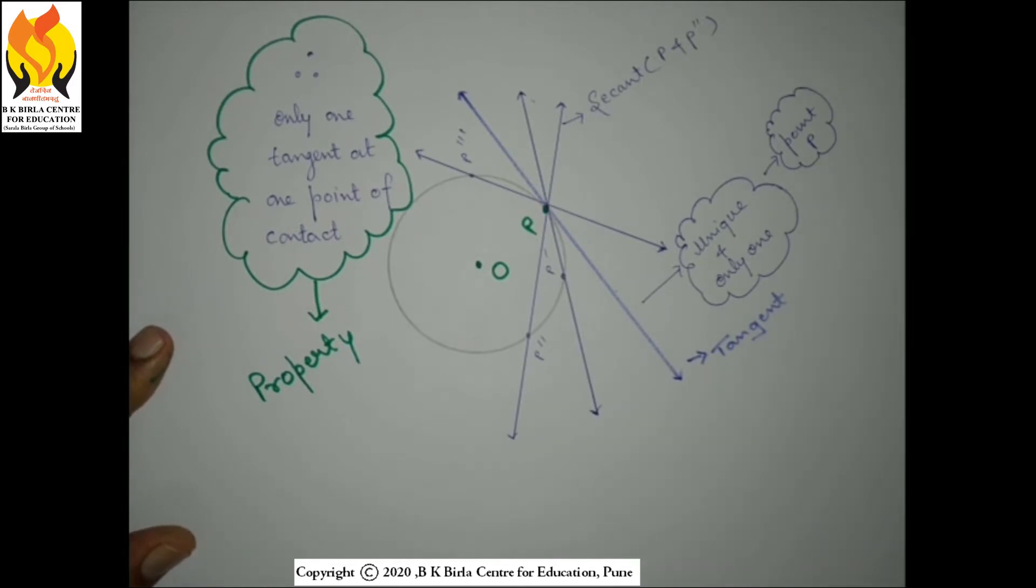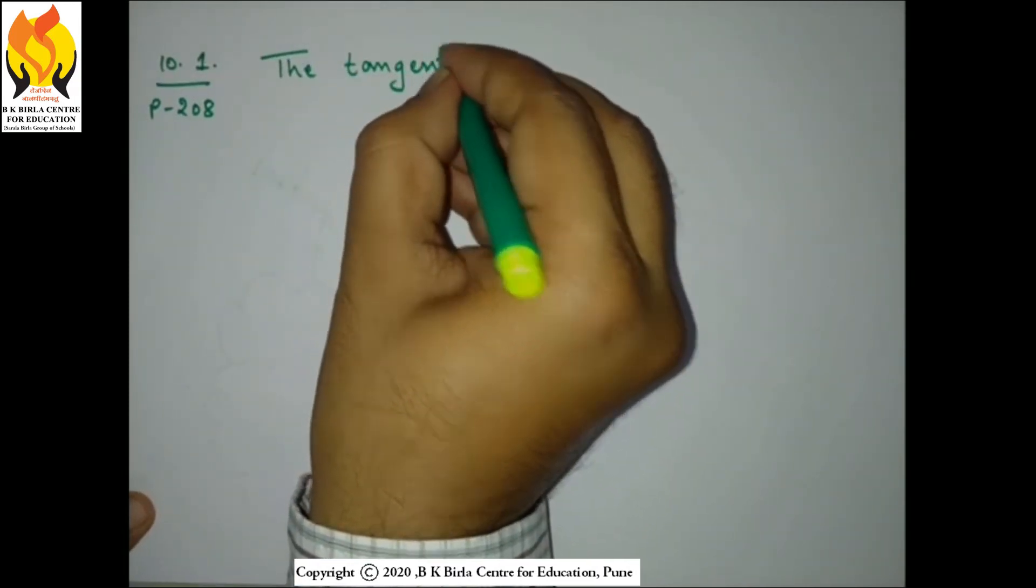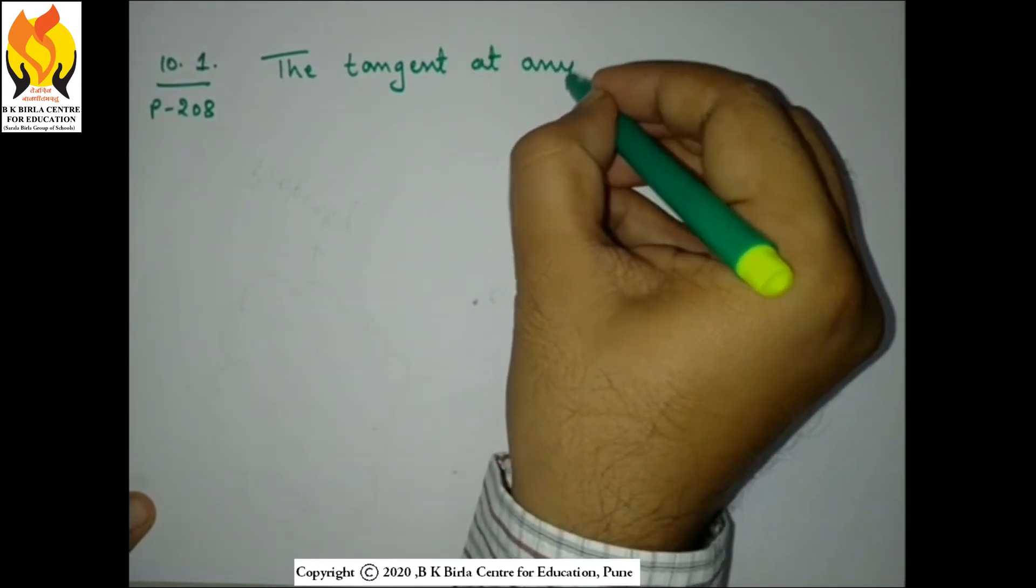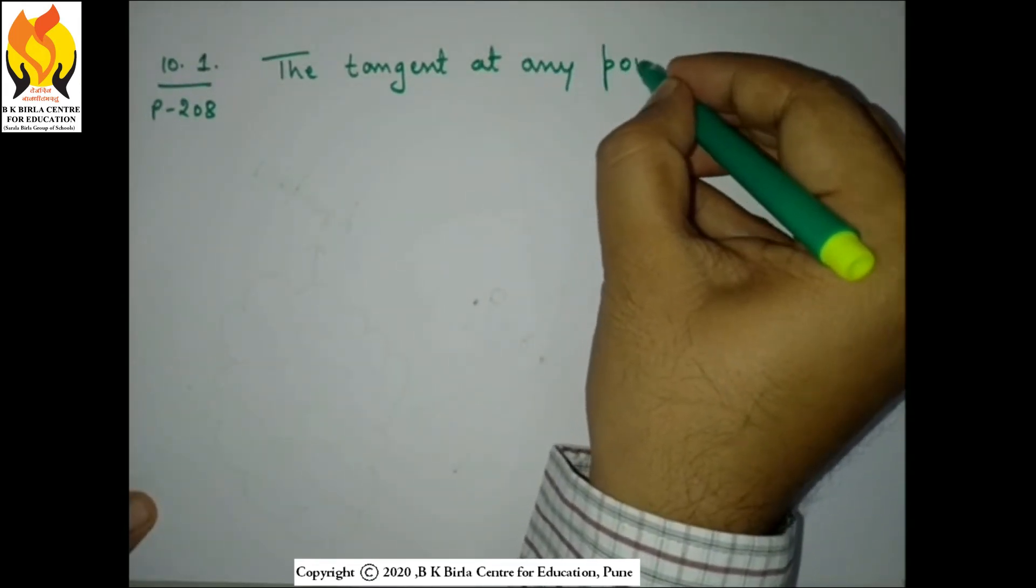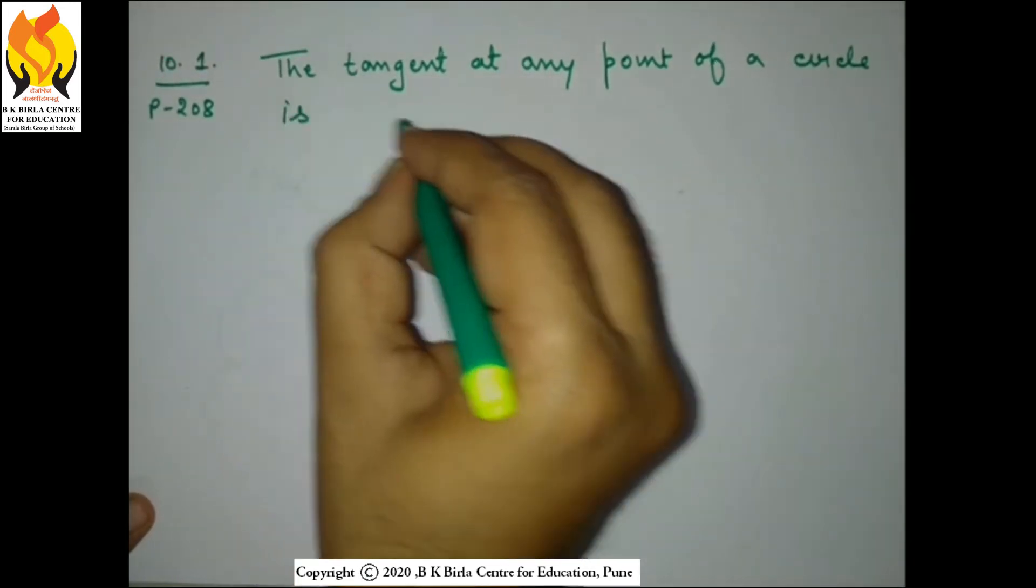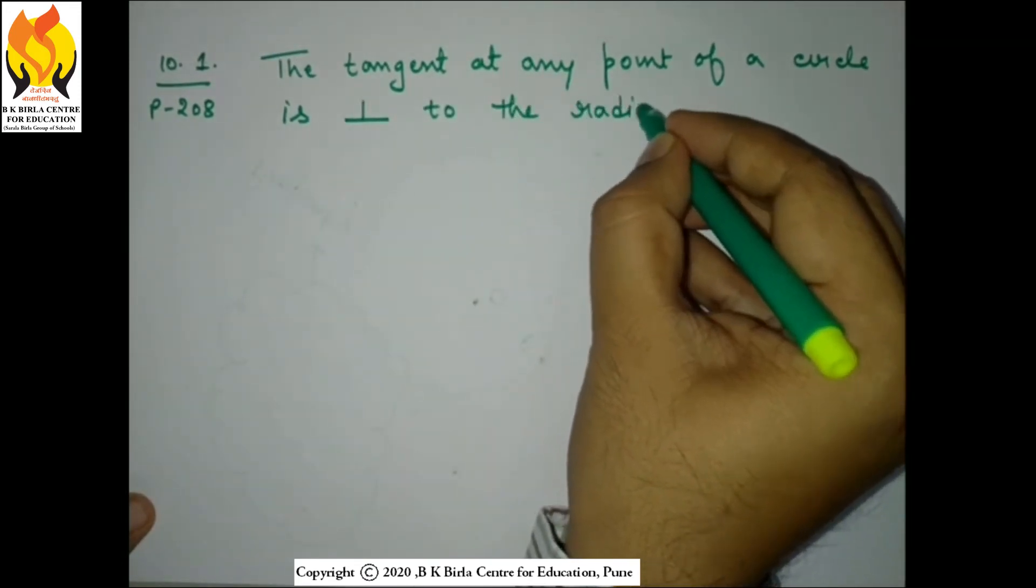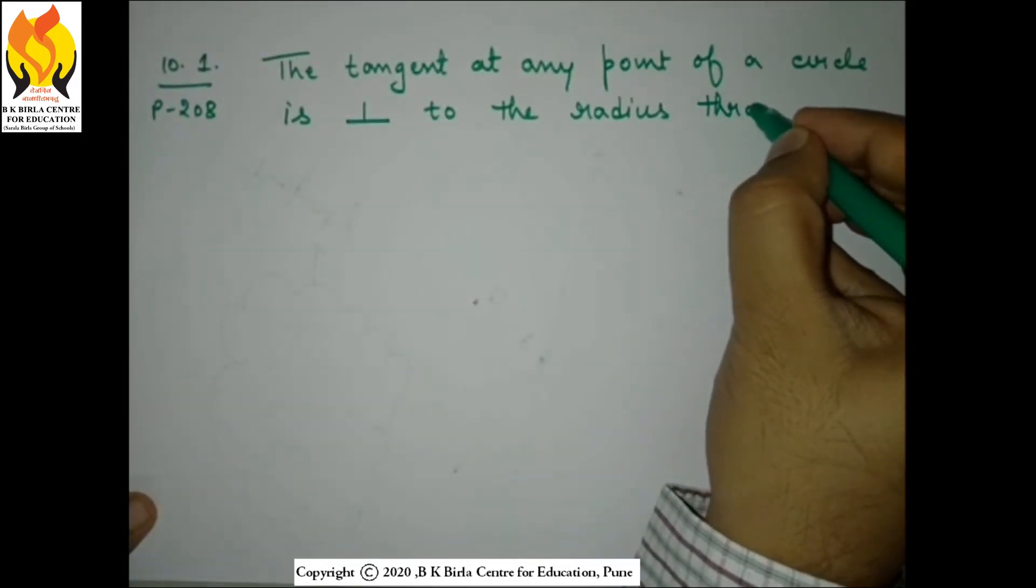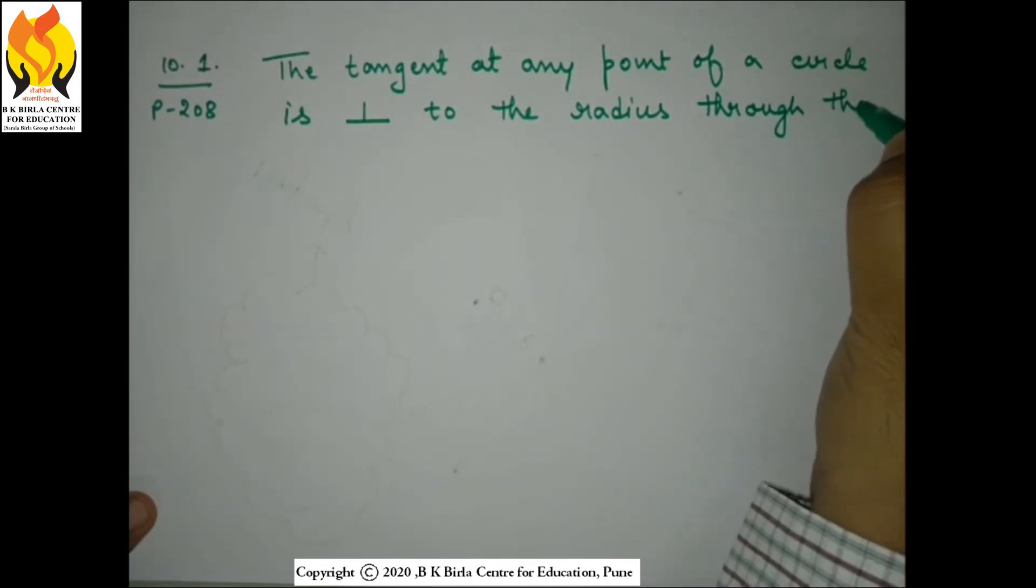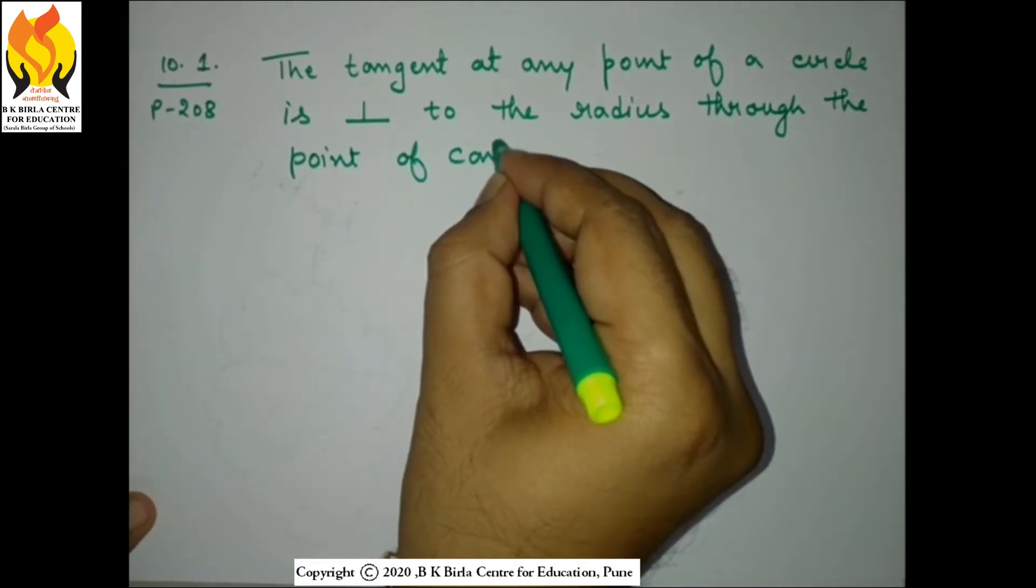Now children, always remember that at a single point of contact, one tangent. Now let us come to a theorem which says that, it is given on page number 208 of your NCERT book, that at a point of contact the tangent and the radius are always perpendicular to each other. The textbook statement is: the tangent at any point of a circle is perpendicular to the radius through the point of contact. These three words 'point of contact' is very very important.